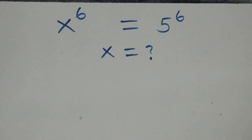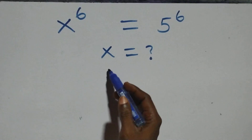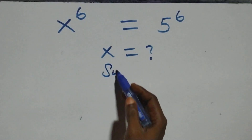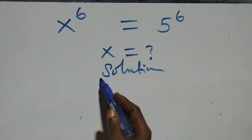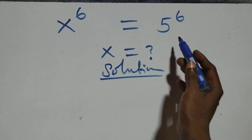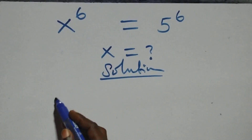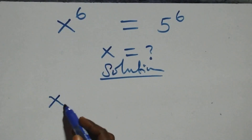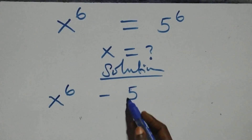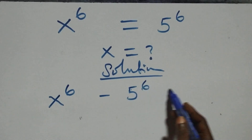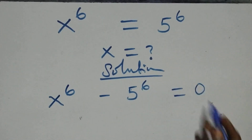Hello, you are welcome. How to solve this nice exponential equation. We have 5 raised to power 6 to the left hand side, and we have x raised to power 6 minus 5 raised to power 6 equals to 0 here.